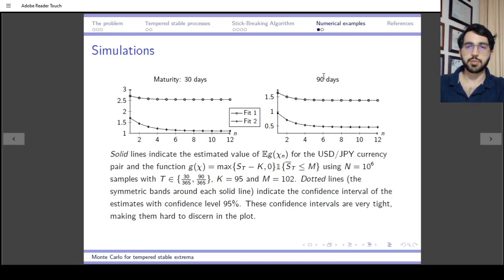Either with maturity of 30 days or 90 days, or the USD and JPY currency pair, and a barrier option right here.